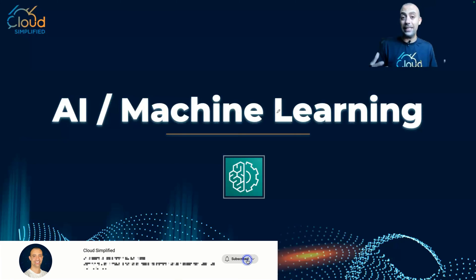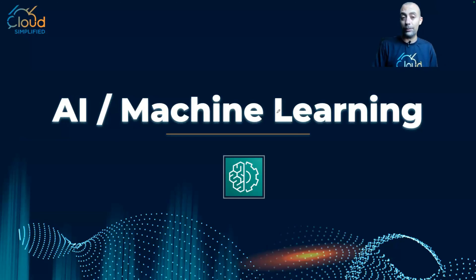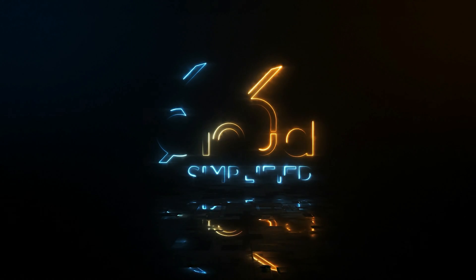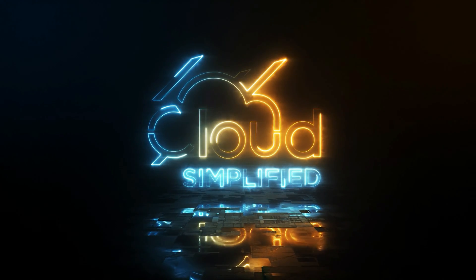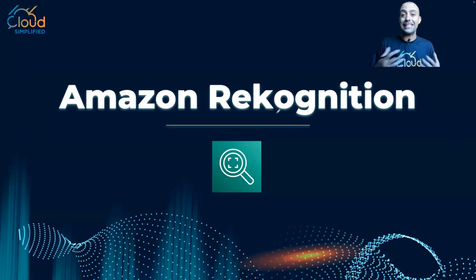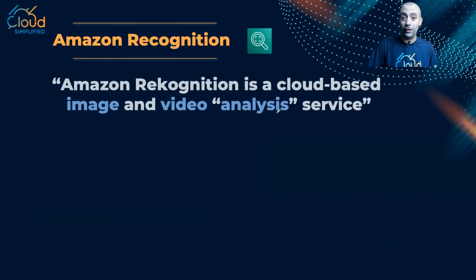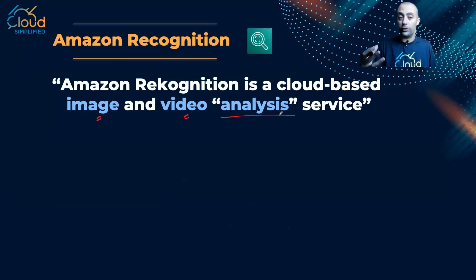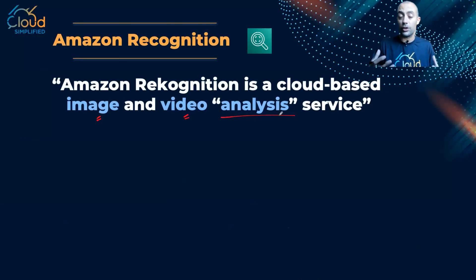Hi everyone and welcome to this new series of videos. In this one we're going to start AI and machine learning AWS services with a brief description. Let me start with the first service — in this video we are going to introduce Amazon Rekognition. Rekognition is the cloud-based service that can help me do image and video analysis.